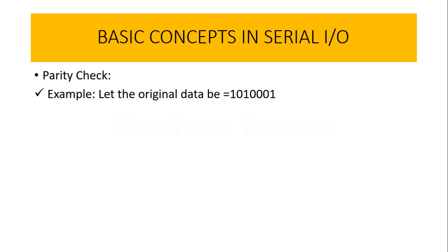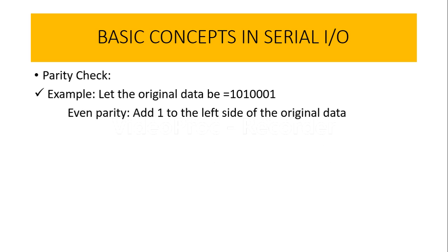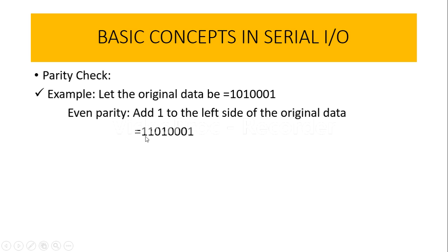we can use either the concept of odd parity or even parity. Let us assume we want to use even parity. If you count the total number of ones in the data, it is an odd number of ones since we have only three ones. So what we have to do is add one additional one to the left side of the original data. The data after adding the even parity bit will become 11010001, where the last bit is the even parity bit.